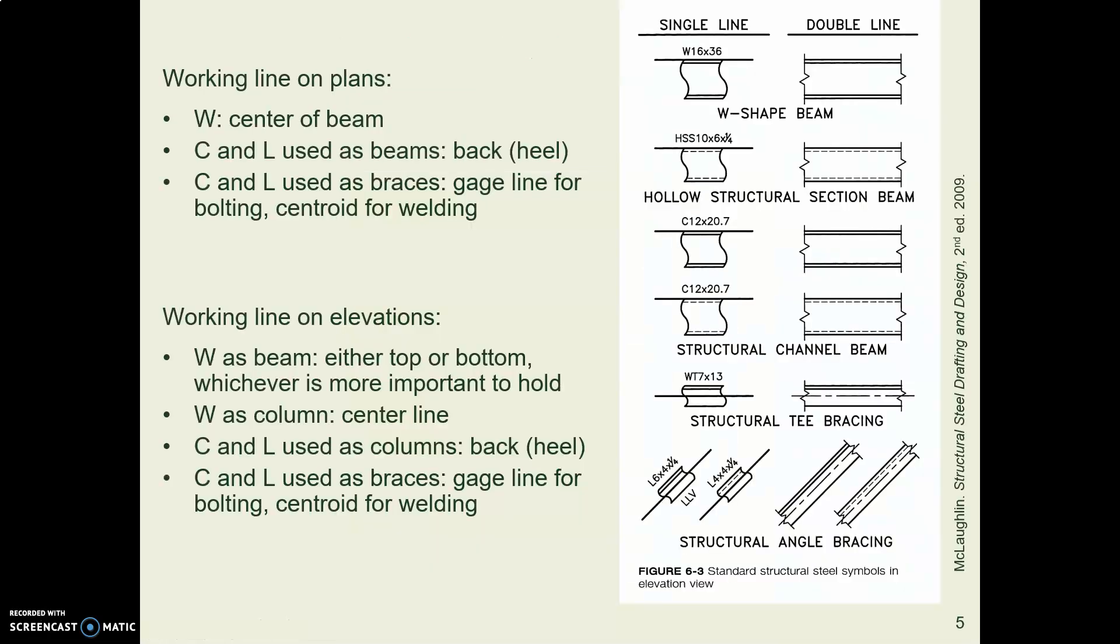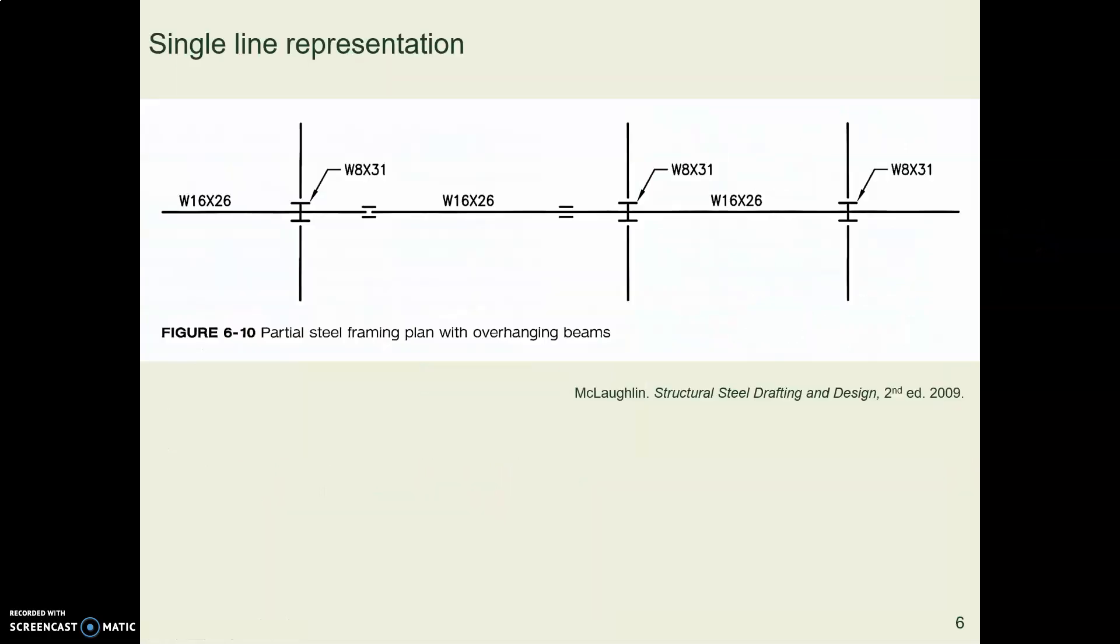Here's a page out of a structural steel drafting book talking about the working line. And there are various places you might choose as the working line, depending on what you're doing. Here is a close-up of a beam framing plan, where you can see the labels for the columns and the beams.